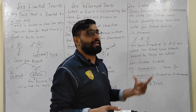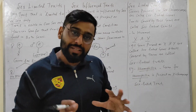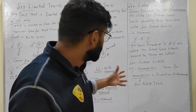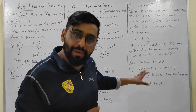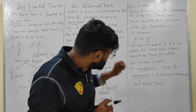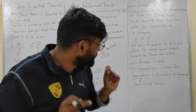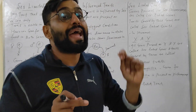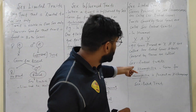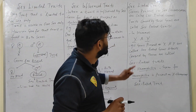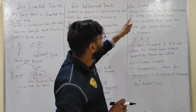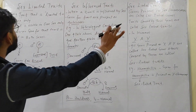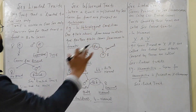For example, hemophilia — we know that it is a condition or disease related to blood clotting. The gene for hemophilia is present on the X chromosome. So the hemophilia trait is called a sex-linked trait. This is the difference between all three traits.